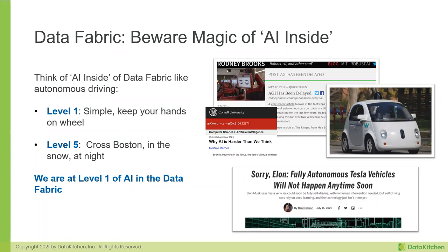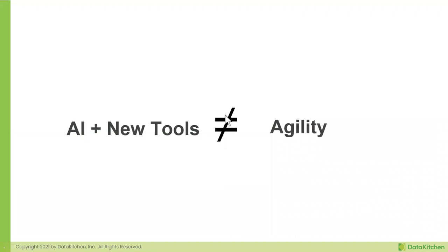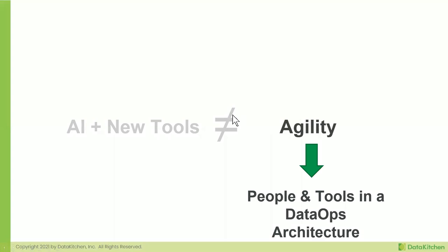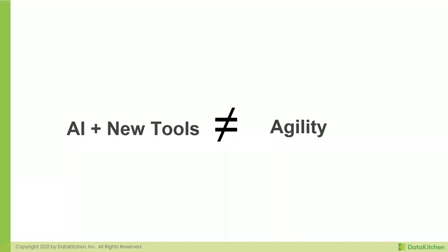We're really building systems that people work in. AI plus new tools does not equal agility. I don't believe that adding AI magic dust on top of it means agility. Agility comes from a 'how' problem — it's about how your people work, the patterns they work in, an architecture that follows DataOps principles. New tools may add some things to your resume, but you have to start working in a different way.